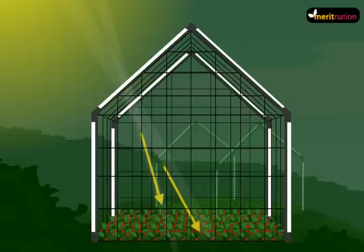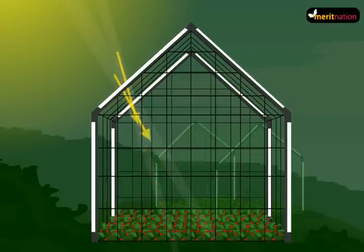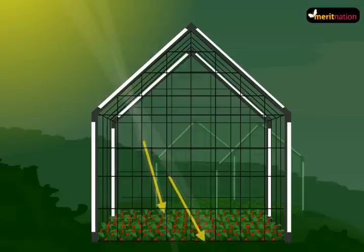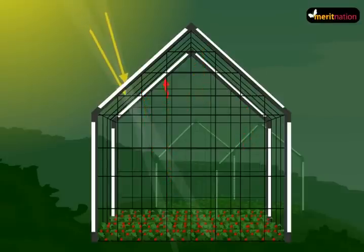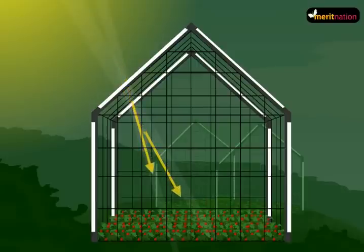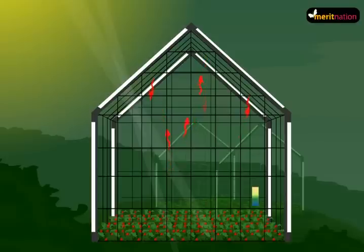Solar radiation can easily pass through glass. What happens then is the ground inside the glass house is heated up. When this ground is heated, it radiates thermal infrared radiation. Now the glass material does not allow this radiation to pass through, so the heat is trapped inside the glass house.